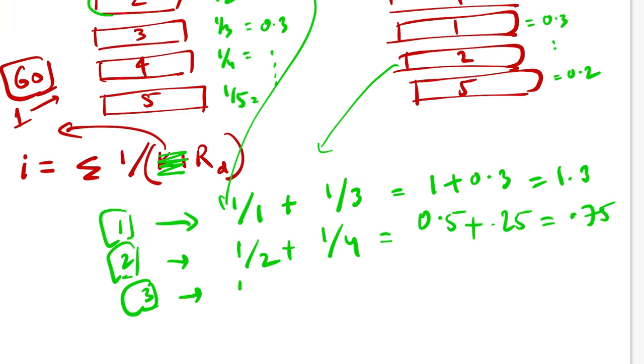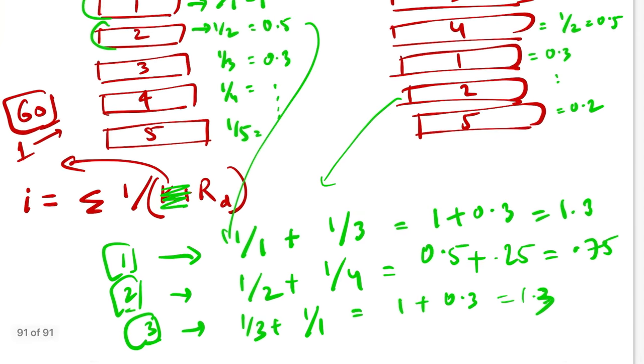Lastly, if you want to calculate for document 3, this comes out to be 1/3 plus 1/1 which is 1 plus 0.33, which is again 1.33. So now you see, in this example, documents 1 and 3 have gotten the same reciprocal rank so there's a tie. You can now go ahead and choose either 1 or 3 as your first element in the fused list, or depending on if you know prior like semantic or syntactic which retriever has to be given more weight, based on that you can push 3 on top of 1 or 1 on top of 3.